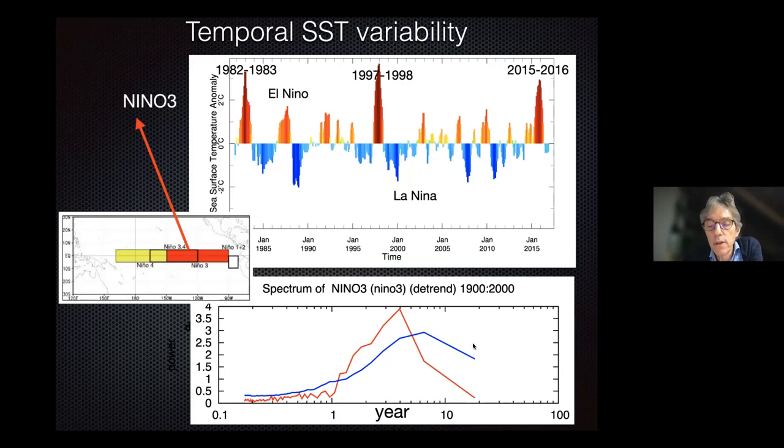The blue curve is basically the red noise spectrum at 95% confidence. This indicates that this is something else than just a passive ocean forced by atmospheric noise — there really is something dynamical going on explaining this variability.